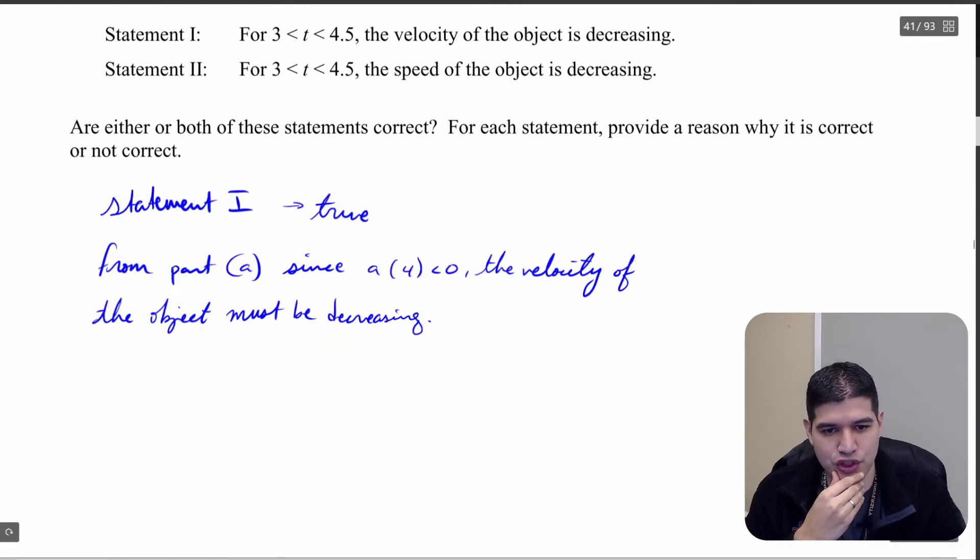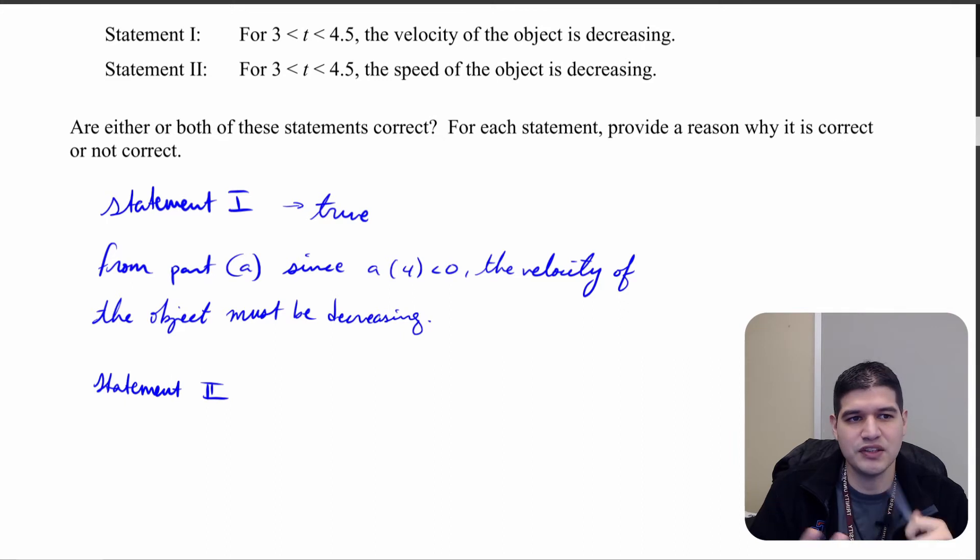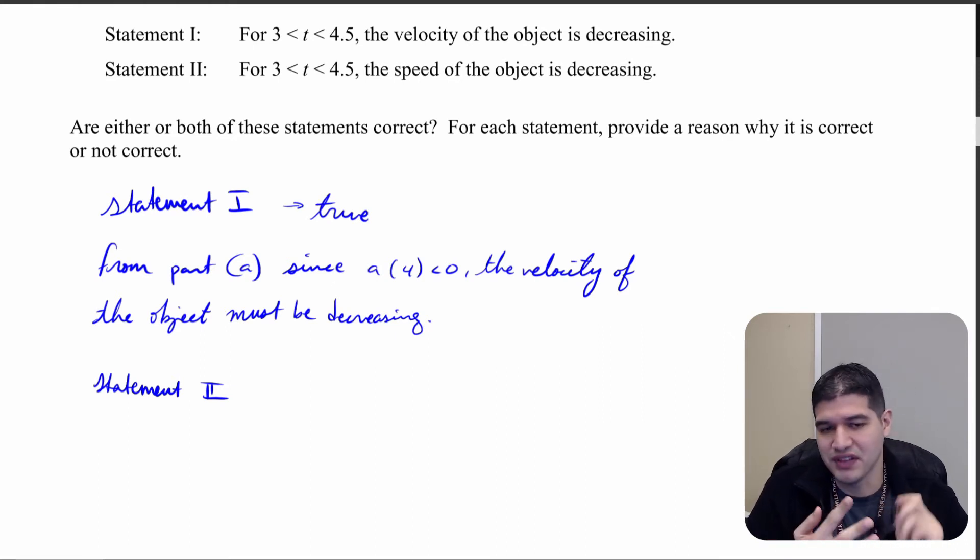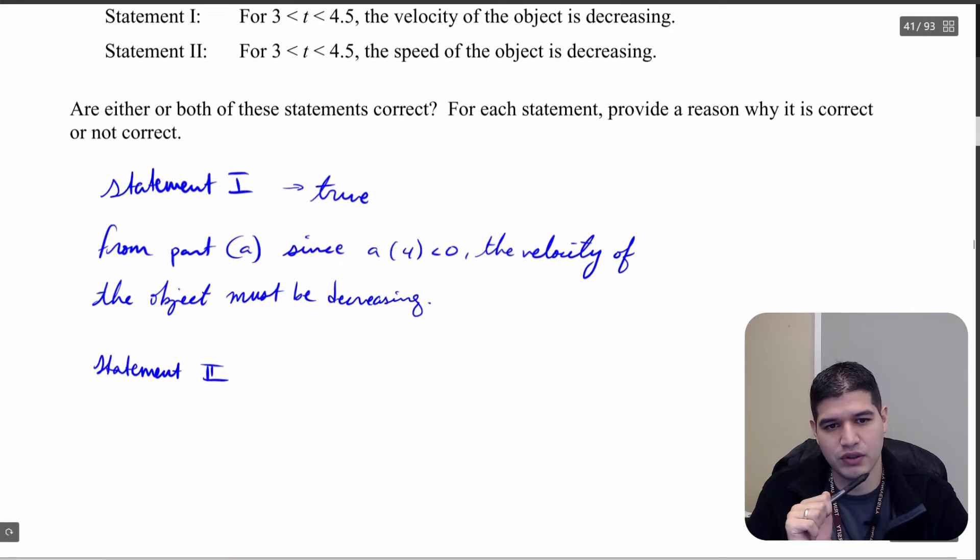So now let's take a look at statement 2. So we want to see is the speed of the object decreasing. So what we want to think about is: are the derivative and the velocity, are they opposite signs? Because if they're opposite signs, that means that the speed is decreasing. If they're the same sign, that means speed is increasing. So we have, we know information about the acceleration at 4. We have no information about the velocity at 4. So let's see if we can find that real quick.